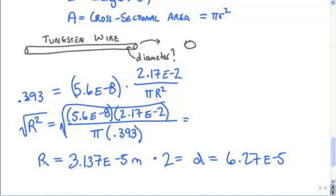After we go ahead and solve this question out, we get the radius equal to 3.137 e to the negative fifth. We multiply it by 2, which is going to give it the diameter, which is 6.27 e to the negative fifth meters.